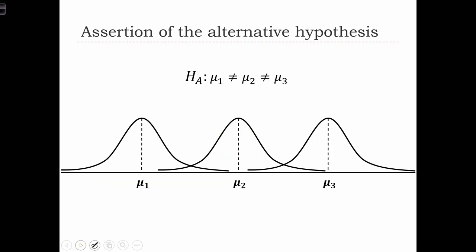The assertion of the alternative hypothesis is that at least one of those means from one distribution is different to the others. So here's one example where if mu 1 doesn't equal mu 2 and also those two are different to mu 3, then we're going to have three distributions all with separate means.